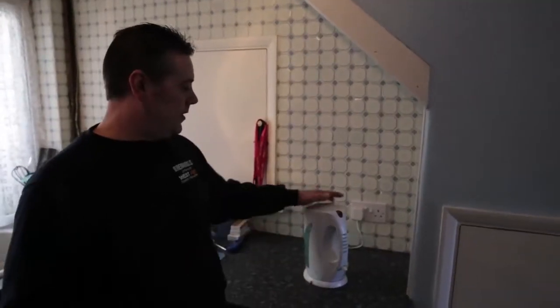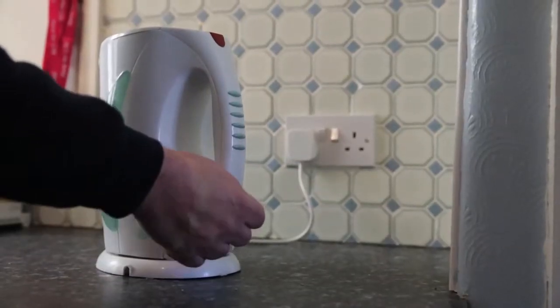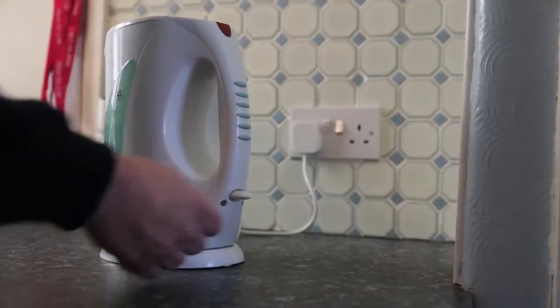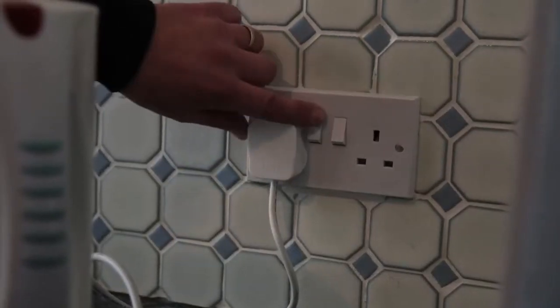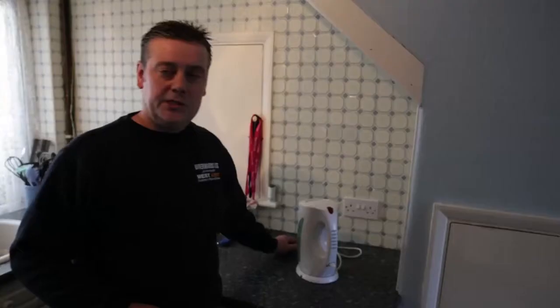In the event of an appliance not working like a kettle, try to turn it on and off. If it does not work, unplug the kettle, go to the consumer unit or fuse board and reset the trip switch.